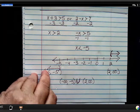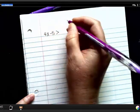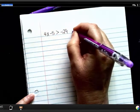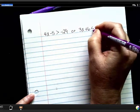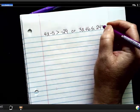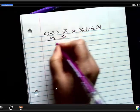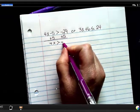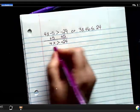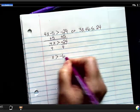Let's try another one of those. So I have 4x minus 5 is greater than negative 29, or 3x plus 6 is less than or equal to 24. So let's add 5. 4x is greater than negative 24. Divide by 4. X is greater than negative 6.